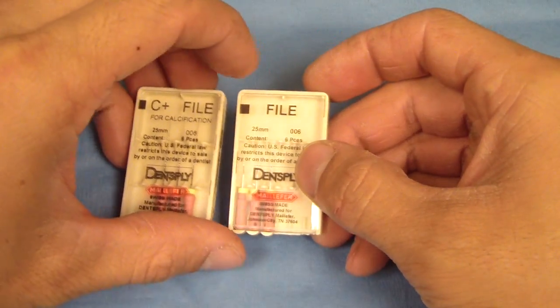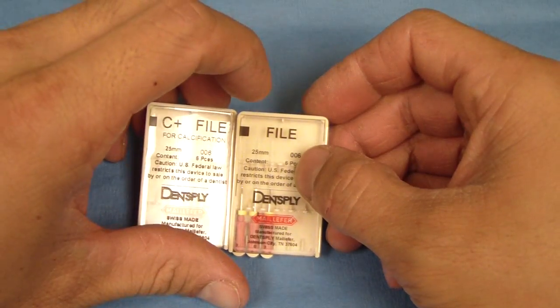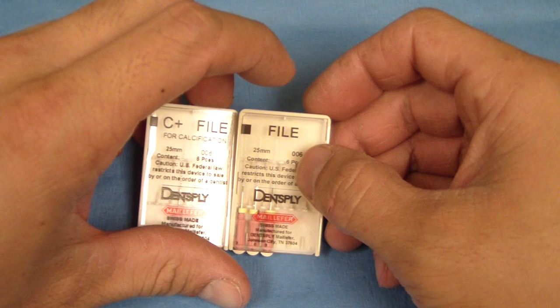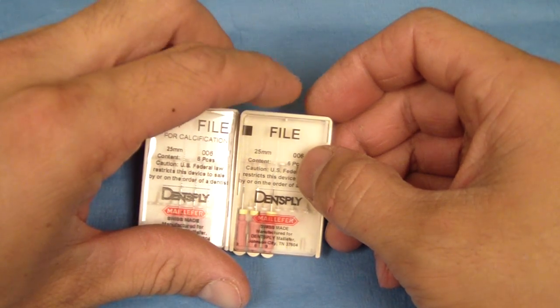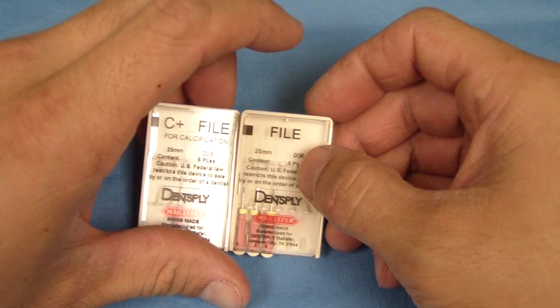So again, that's a C plus file, and that could potentially help you in finding those calcified canals, because they're just a little more stiff. Cheers.